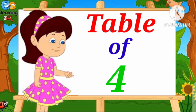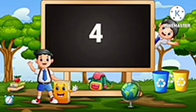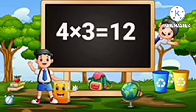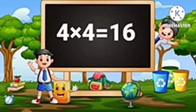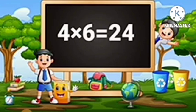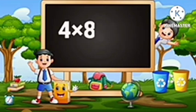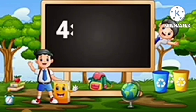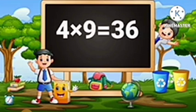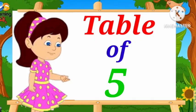Table of Four. Four-One's are Four. Four-Two's are Eight. Four-Three's are Twelve. Four-Four's are Sixteen. Four-Five's are Twenty. Four-Six's are Twenty-Four. Four-Seven's are Twenty-Eight. Four-Eight's are Thirty-Two. Four-Nine's are Thirty-Six. Four-Ten's are Forty.